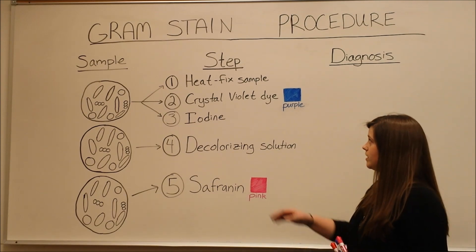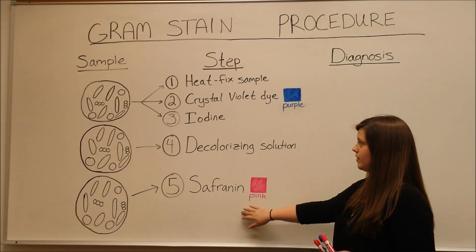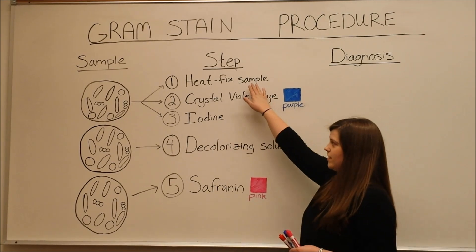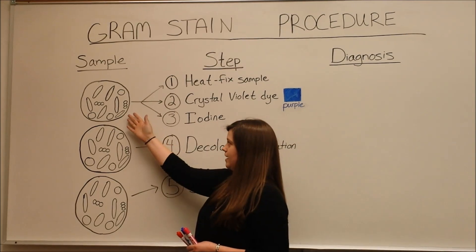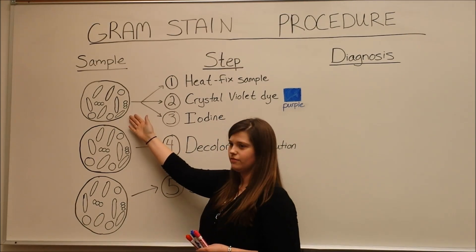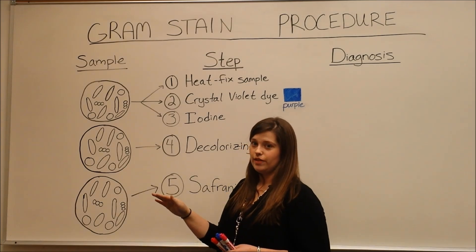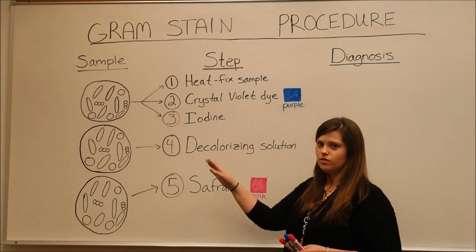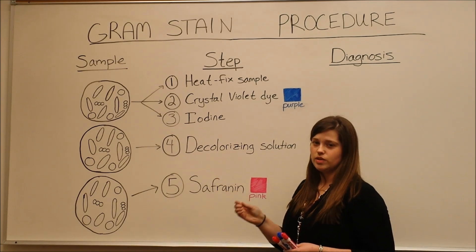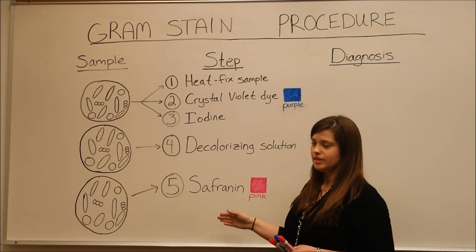Today we're going to talk about the steps of the gram stain. It starts with heat fixing a sample. This is when you have a biological sample that has been heat fixed to a slide simply by passing it over a flame. This helps the sample containing all of the bacteria to stick to the slide through all of the subsequent steps.